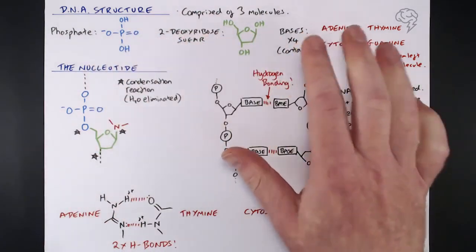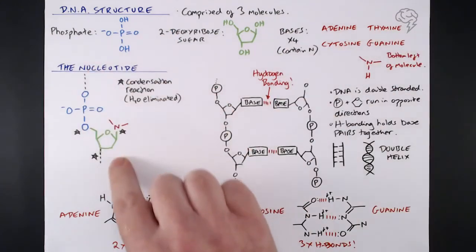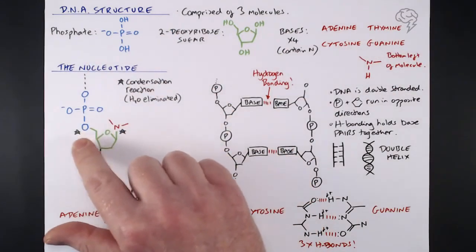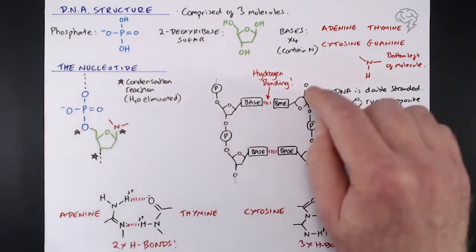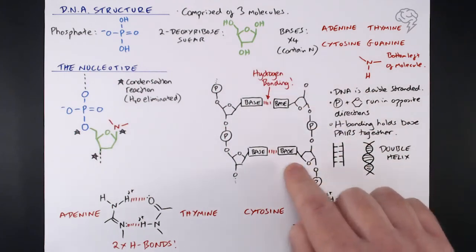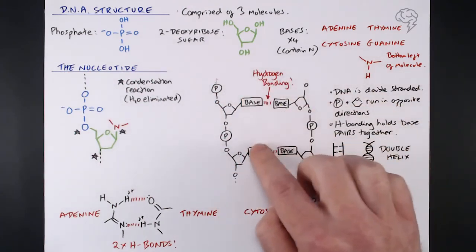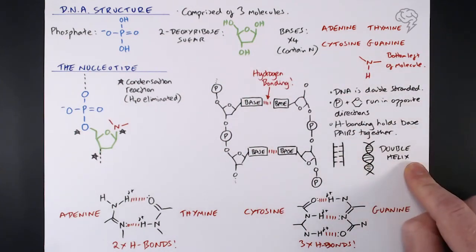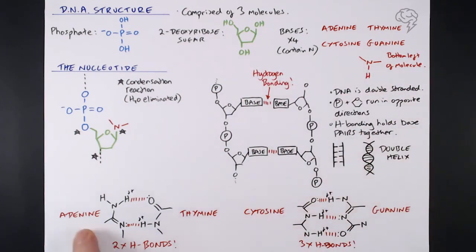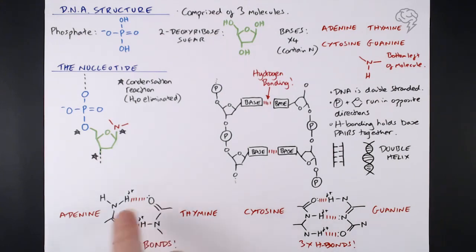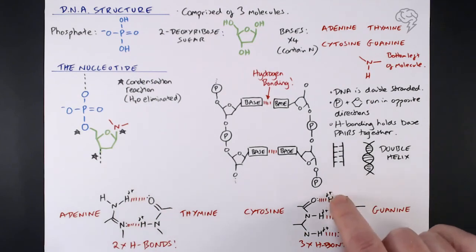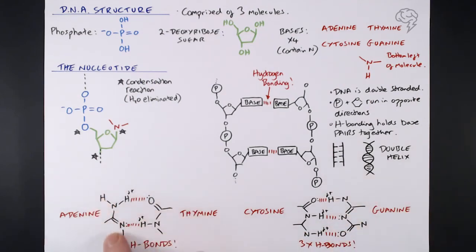Overall: three component molecules — don't worry, they're given in your data sheet — but know how they're put together, know that there are condensation reactions to form the new covalent bonds to make the larger molecule. With the backbone running in opposite directions and base pairs held together by hydrogen bonding, we get this double helix structure. A classic exam question is why adenine pairs with thymine and cytosine with guanine — be prepared to draw these molecules from your data sheet and show where they hydrogen bond. That's your DNA structure.